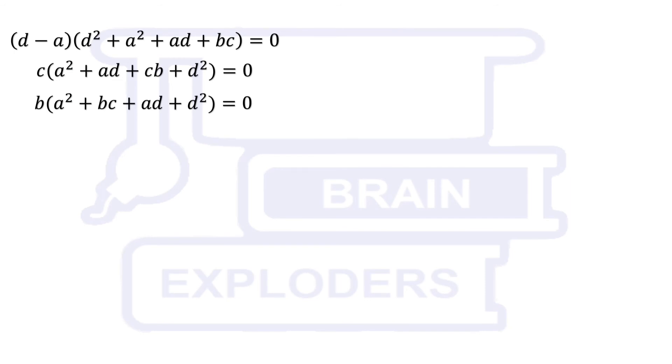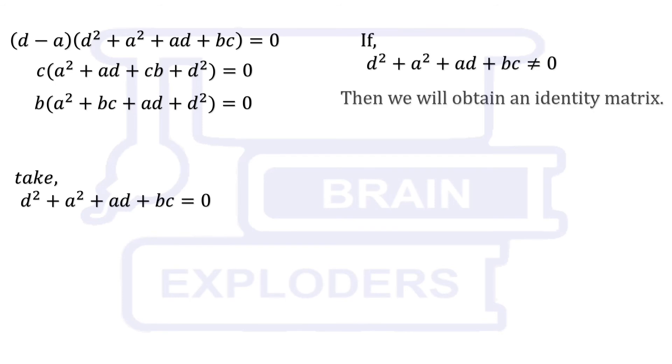Now in these three equations, either value inside bracket is 0 or values outside bracket are 0. We are taken inside values as 0 because if we consider outside values as 0, then finally we will obtain an identity matrix.